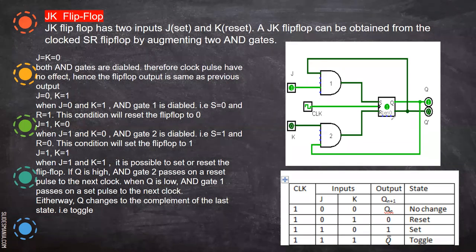Next, consider J is one and K is zero. Now the K gate is disabled and the J gate is enabled, and it goes as input for the SR flip-flop. Now S is set, so Q will be one and Q bar will be its complement, zero. This condition is said to be set.